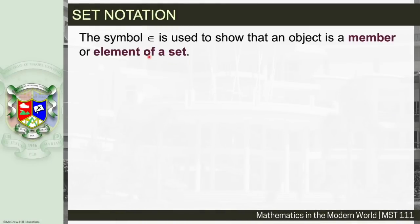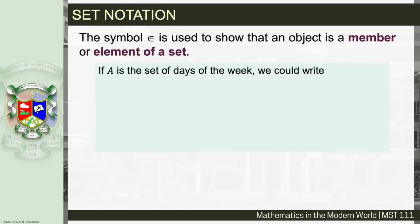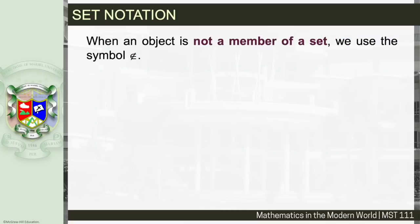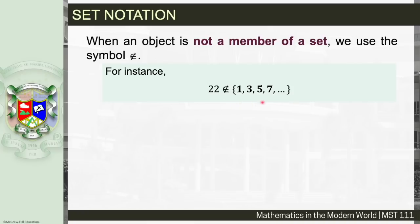The set notation symbol ∈ is used to show that an object is a member or an element of a set. For instance, if A is the set of days of the week, we write Monday ∈ A, read as 'Monday is an element of set A.' Likewise, Friday ∈ A because Friday is also a day of the week. On the other hand, when an object is not a member of a set we use the symbol ∉. For example, 22 ∉ {1, 3, 5, …} because 22 is even, not an odd counting number.